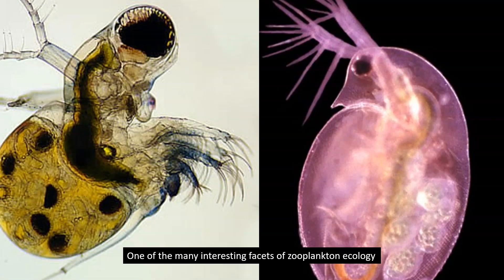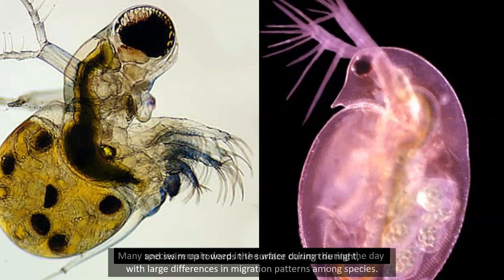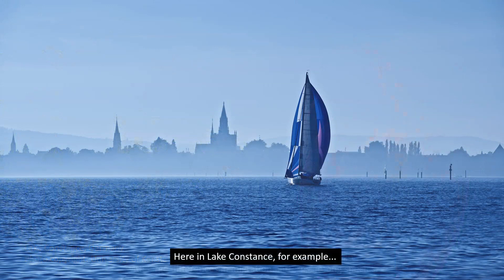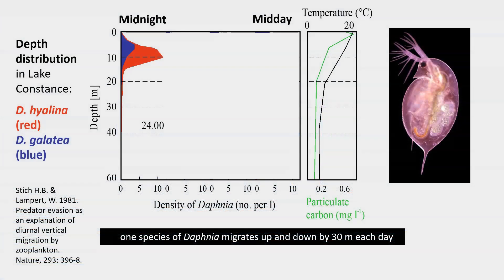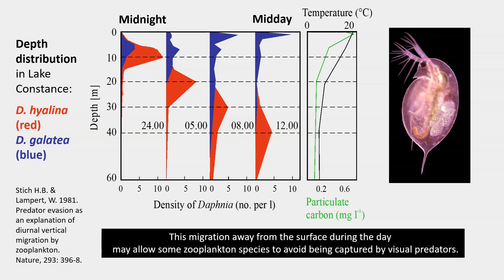One of the many interesting facets of zooplankton ecology is the swimming behavior of these animals over the 24-hour cycle. Many species remain deep in the water column during the day and then swim upwards towards the surface during the night, with large differences in migration patterns among species. Here in Lake Constance, for example, one species of Daphnia migrates up and down by 30 meters each day, while a second species shows little change in its distribution over the 24-hour cycle. This migration away from the surface during the day may allow some zooplankton species to avoid being captured by visual predators.